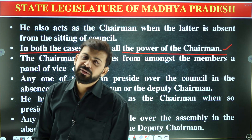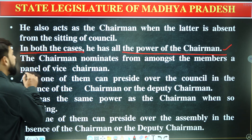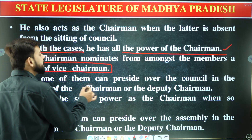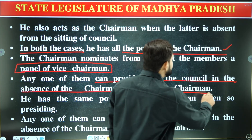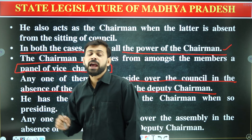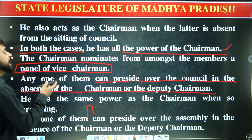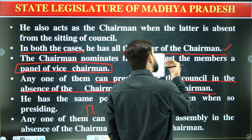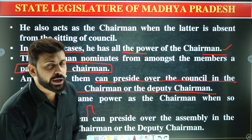The Chairman nominates members from the panel of Vice-Chairpersons, and anyone from this panel can preside over the council in the absence of both the Chairman and Deputy Chairman. The difference from the legislative assembly is simply that there it was the Speaker and Deputy Speaker, while here it is the Chairman and Deputy Chairman.